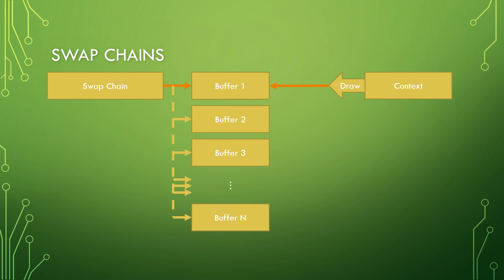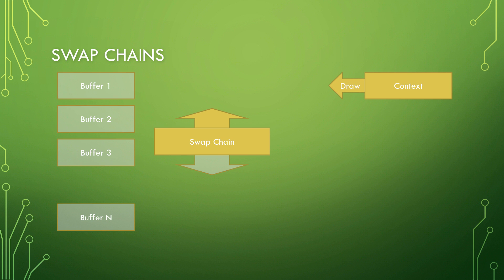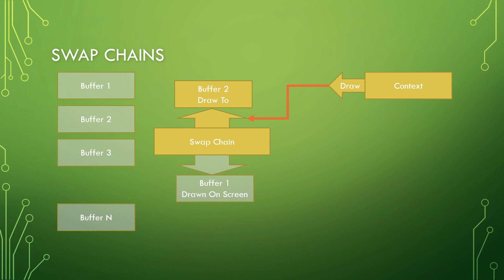What actually happens is we draw to buffer one while buffer two is drawn to the screen. When we switch, buffer one is drawn to the screen and the nth buffer becomes the one we draw to. Each time we switch, the one that was drawn to the screen becomes the one we were drawing to, and the one we were drawing to moves to the next in the queue. The swap chain abstracts all of this — we're given a simple structure with hidden buffers, one drawn to screen and one back buffer pointer for our context to use.